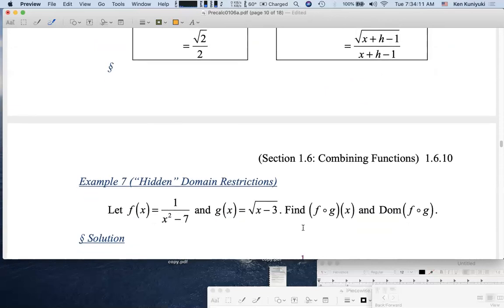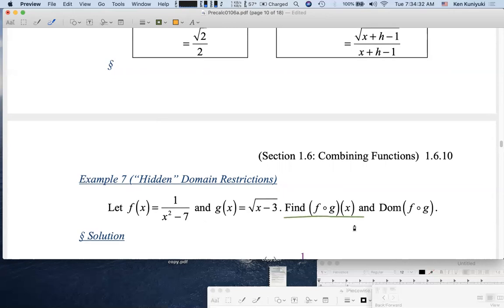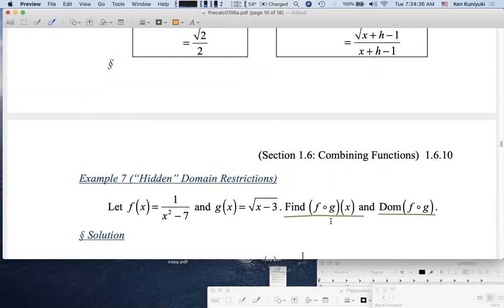However, sometimes there are hidden domain restrictions, sometimes kind of complicated ones. But our focus here will be on how to construct the rule for a composite function. Let f(x) equal 1 over (x squared minus 7) and g(x) equal the square root of x minus 3. Find (f ∘ g)(x), that's our key concern, and also we'll discuss the domain of f circle g.